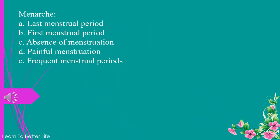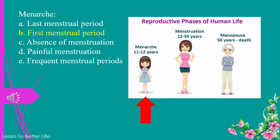Menarche. a. last menstrual period. b. first menstrual period. c. absence of menstruation. d. painful menstruation. e. frequent menstrual periods. The answer is b. first menstrual period.